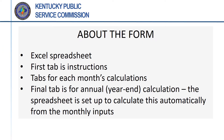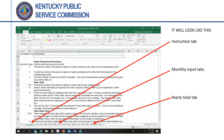The Water Loss Form is an Excel spreadsheet with multiple tabs. The first tab includes instructions for completing the sheet. There are tabs for each month of the year, and the final tab is for the year-end total water loss calculation. The form will open to the Instruction tab, with the other tabs in monthly order from left to right, ending with the yearly total tab. The remaining slides are a step-by-step demonstration of the instructions in the first tab.